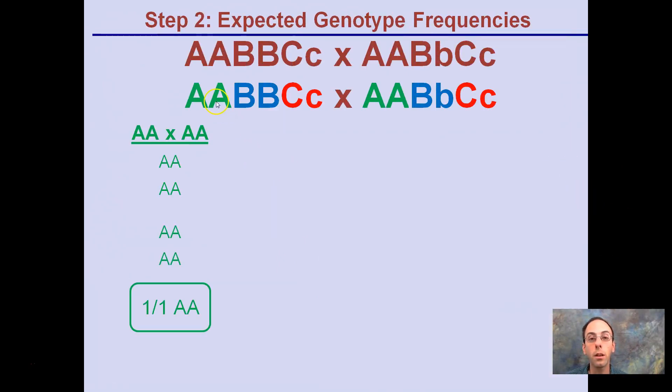So starting with the first one, because both parents in this case are homozygous dominant, 100% of the time that's going to be the resulting offspring. They're called true breeding in that sense, for that allele at least.